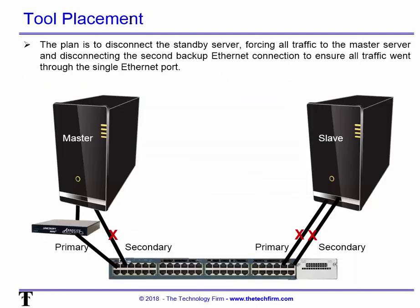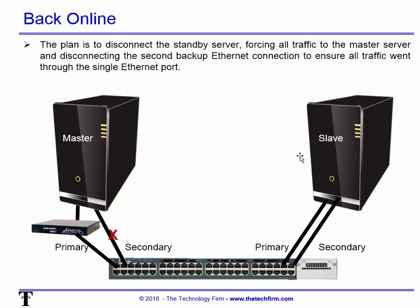The plan is to disconnect the standby server, force all the traffic through the primary connection, and put the Apposite WAN emulator inline with that primary connection. We leave all the emulation settings off for a bit, then have the client do his regular everyday work on the master — knowing the slave is not in the picture and the secondary link is not operating. He said everything was pretty cool. Then we noticed there's a database synchronization that happens between the two servers, and we thought, let's look at that synchronization process and measure how long it takes.